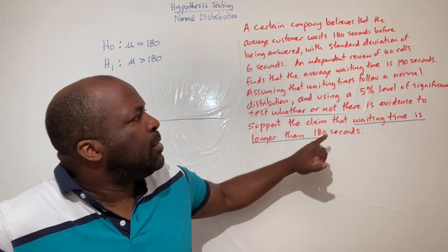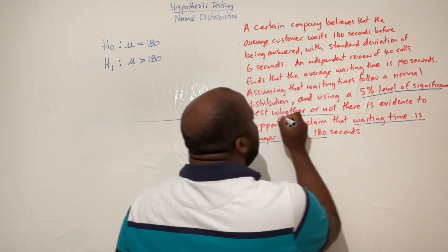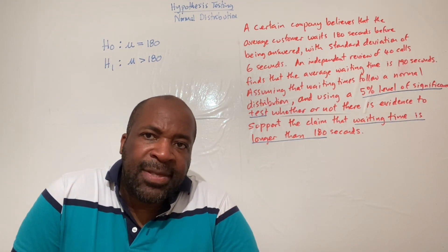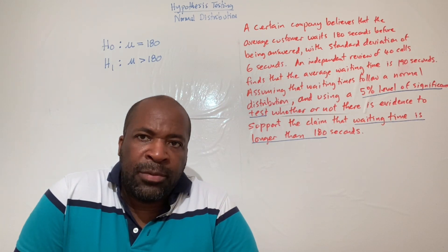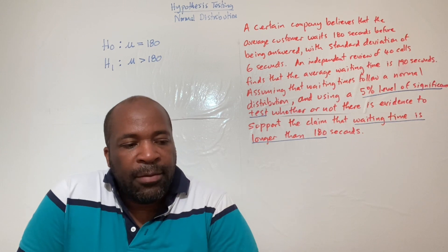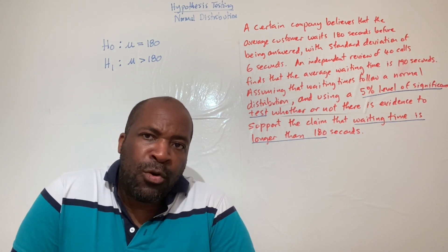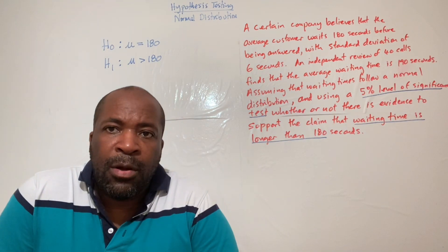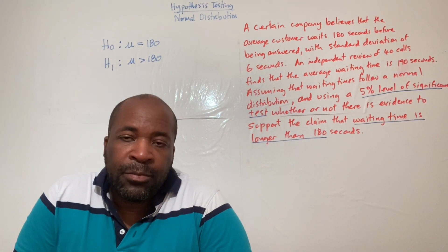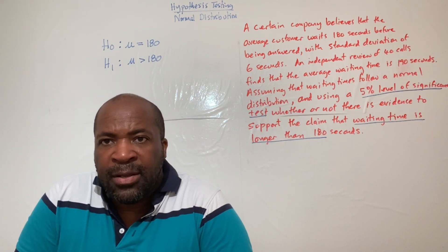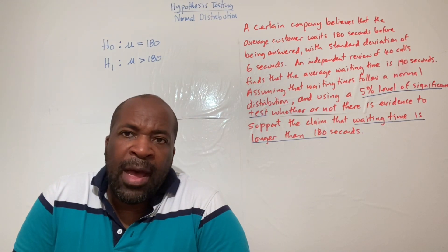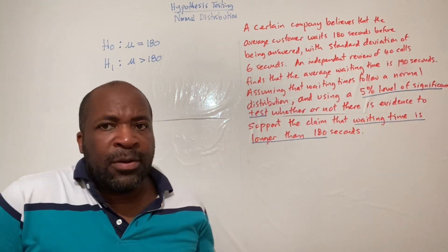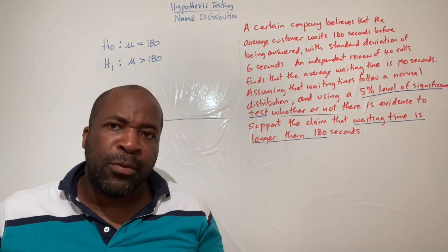We're testing at a five percent level of significance. To understand what this means, consider a courtroom analogy. Two possible errors exist: sending an innocent man to jail, or setting a guilty man free.